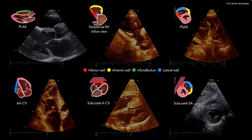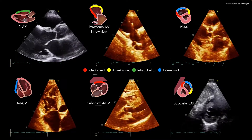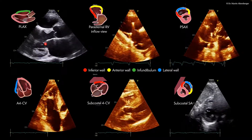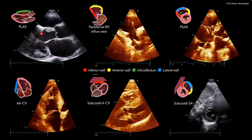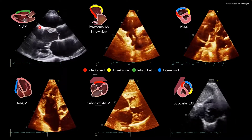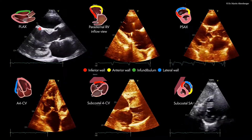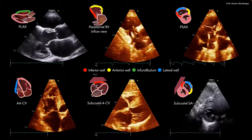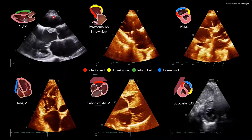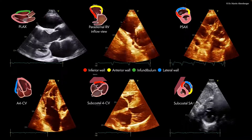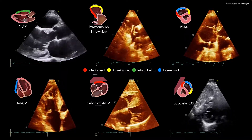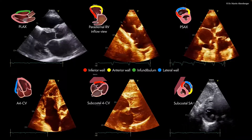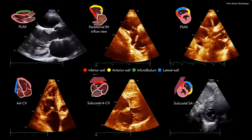Moving on to pathological examples, here we have several loops where we can appreciate that there is definitely a reduction in left ventricular function present. Here we see a hyperechoic interventricular septum — this is a scar, so this is probably ischemic heart disease. And over here we see again the infundibulum of the right ventricle, and already in this view the function of the right ventricle seems impaired — not severely impaired, but definitely not normal as we have seen before.